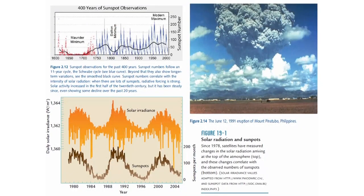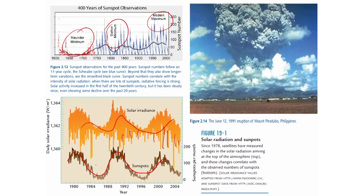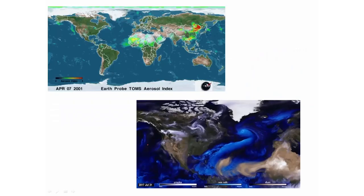Going back to the forcings, we still have to keep in mind solar forcing and volcanic forcing. Now we have satellites going out of the atmosphere and looking at radiation coming in — unlike before where we relied on historical documents or sunspot counts. Satellites give us much more accurate measurements, and they correlate with sunspots, which we already knew. The idea is that more sunspots means more solar irradiance, and as sunspots are reduced, radiation is reduced because of the plage around the sunspots. There is an 11-year cycle. The volcanic forcing has varied over time and solar variability continues.